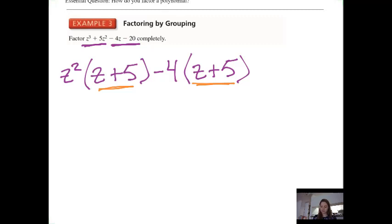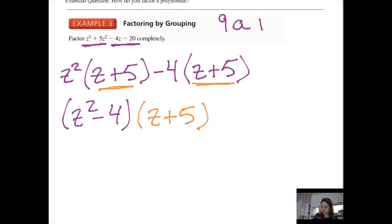I have z squared times z plus 5 minus 4 times z plus 5. So I can rewrite this as z plus 5 and z squared minus 4. Another way of thinking of this is, this is the same as if I had, say, 9a's minus 4a's, right? I have the same multiplier. I'm multiplying both coefficients by a, and so I can combine like terms, and I can do 9 minus 4, 9 minus 4 times a. That's the equivalent. You're used to simplifying that, combining like terms.